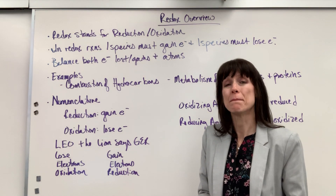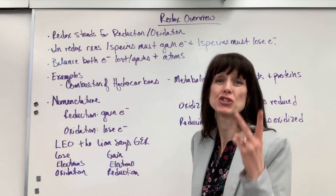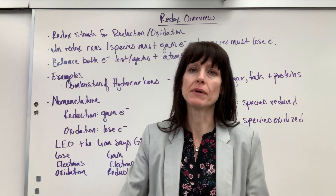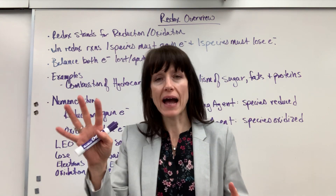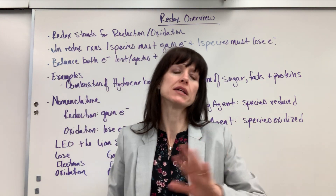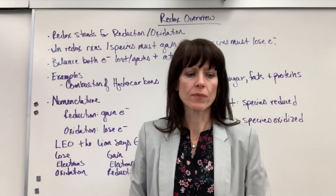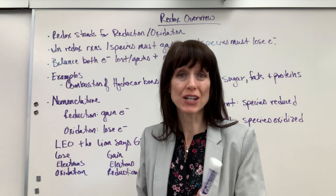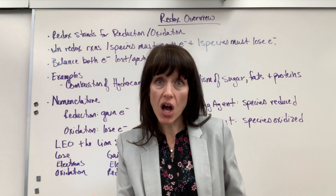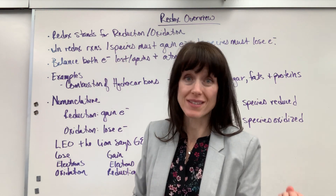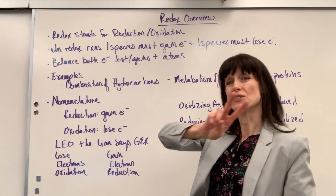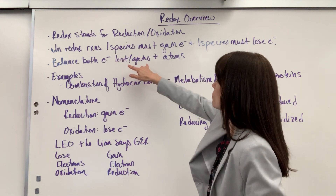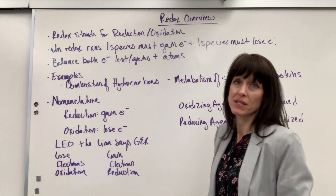Something really special: when we balance redox reactions, we actually balance two things. Not only do we balance atoms — using coefficients to make sure you have the same amount of atoms on the reactant side as on the product side — but you also have to balance the electrons. The total electrons lost has to equal the total electrons gained. So you balance two things, and you'll see that in several videos.